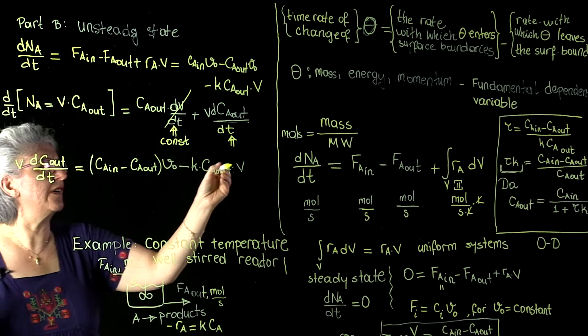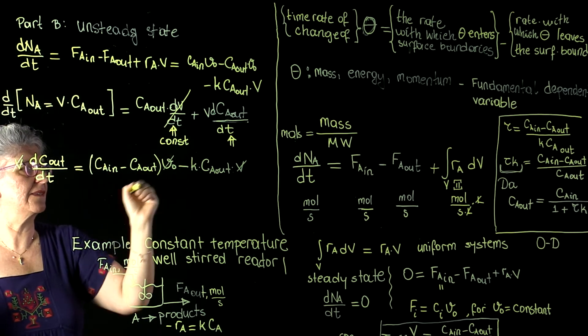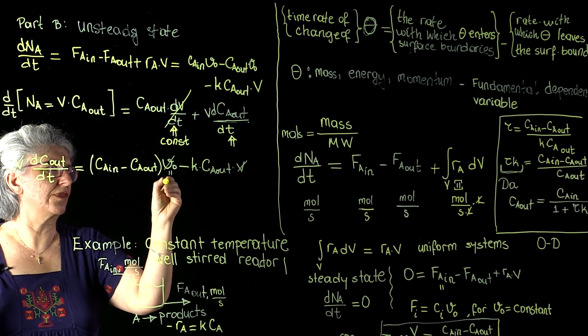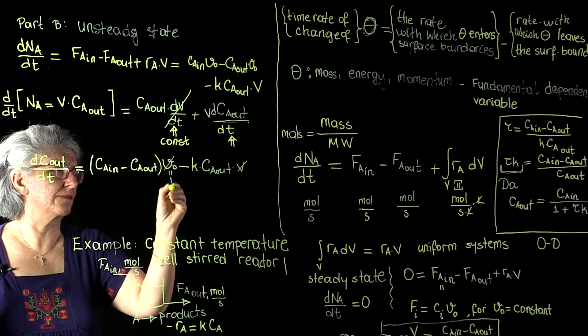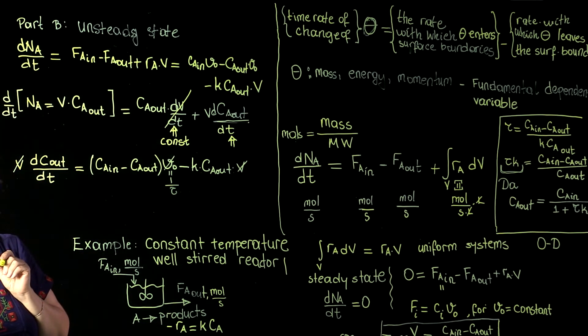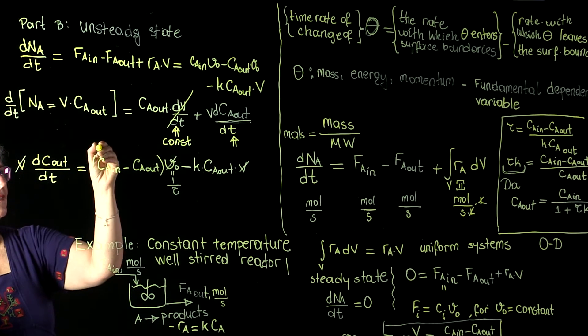We are going to rearrange to cancel V, make this 1 over tau, and then we are going to regroup this in terms of constants and variables.